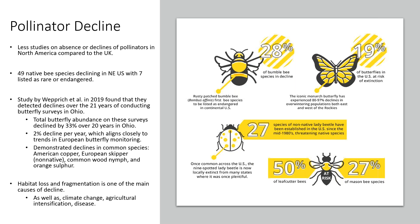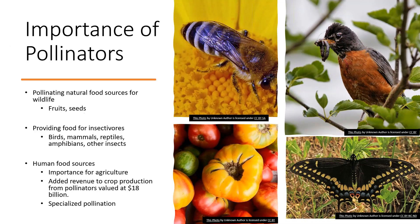According to the Xerces Society, 28 percent of bumblebee species are in decline, and 19 percent of butterflies are at risk of extinction in the United States. The nine-spotted lady beetle is now locally extinct from many states where it was once plentiful, while 27 non-native lady beetle species have become established since the mid-1980s. 50 percent of leaf-cutter bees and 27 percent of mason bee species are at risk — very serious given the importance of pollinators to the natural world.